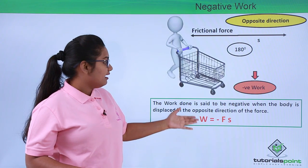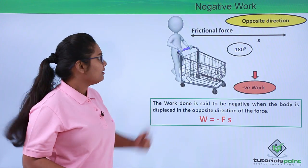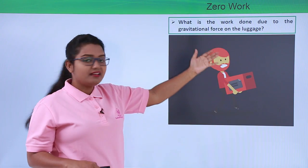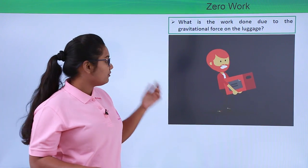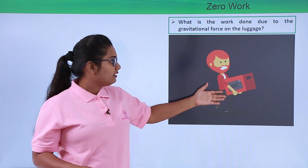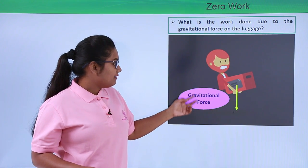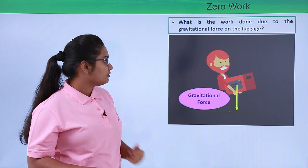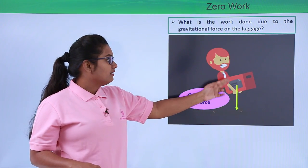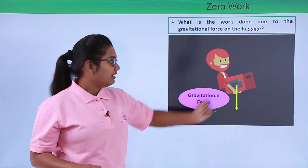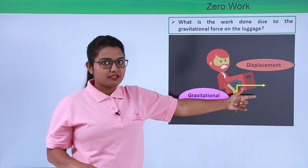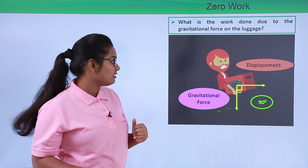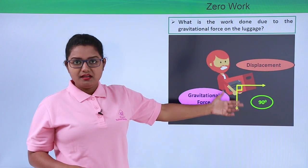Now let us look at another situation: what is the work done due to the gravitational force on luggage? The gravitational force is in the downward direction, towards the surface of the earth. But the luggage was moved by the man in the forward direction. We clearly see that the angle between the gravitational force and the displacement is 90 degrees.